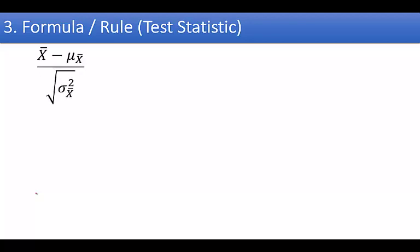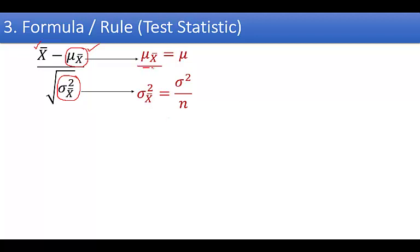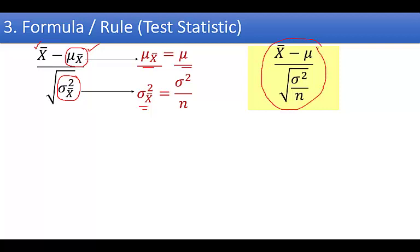The formula used as a basis to reject or retain the null hypothesis is: x-bar minus mu of x-bar, divided by the square root of sigma-squared of x-bar. Since mu of x-bar equals mu, and sigma-squared of x-bar equals sigma-squared over n, substituting gives us: x-bar minus mu divided by the square root of sigma-squared over n. This expression follows the Z distribution when population variance is used.